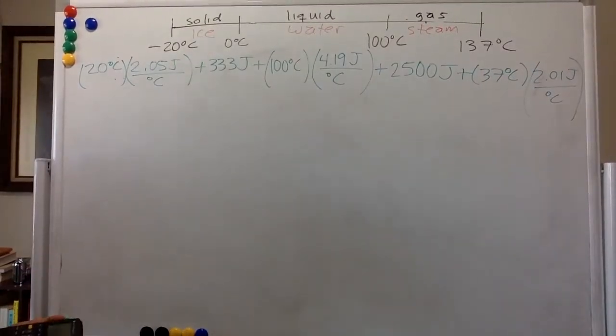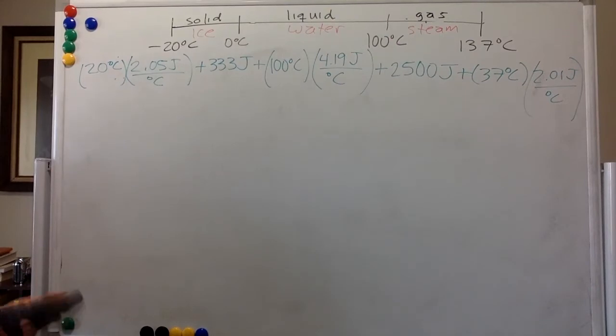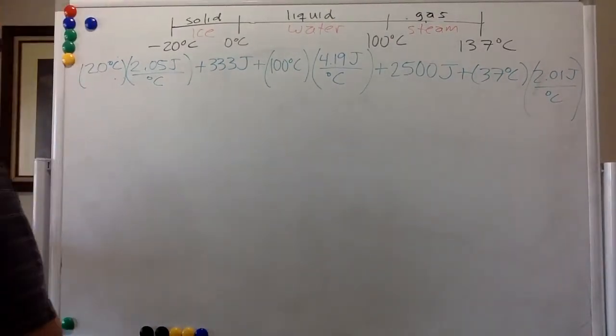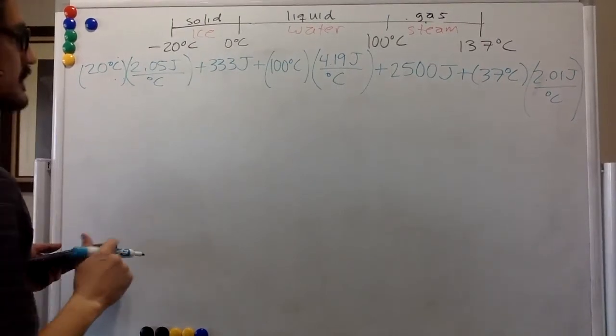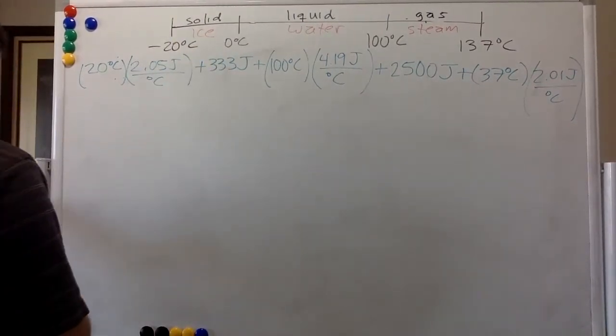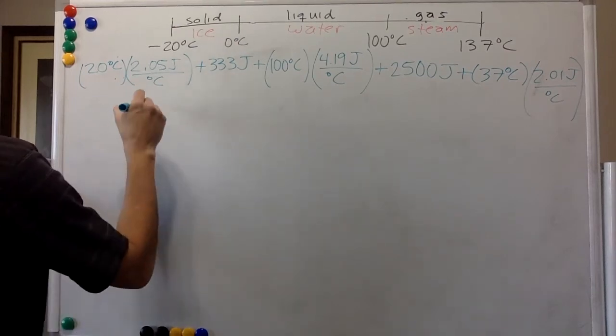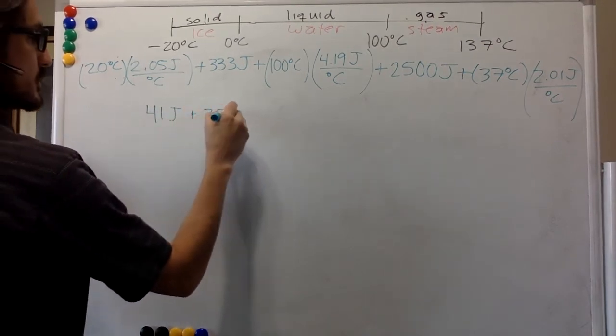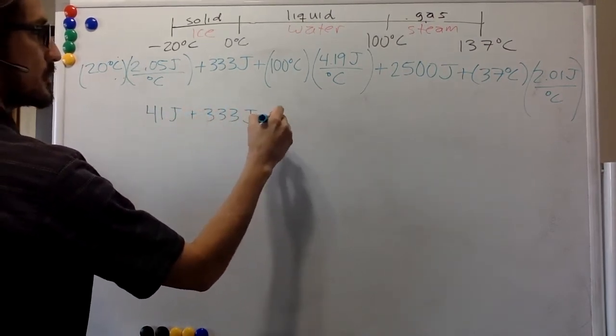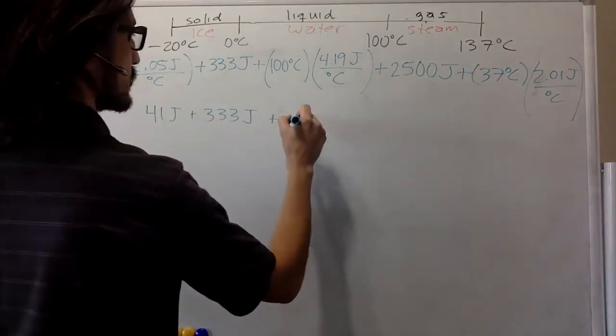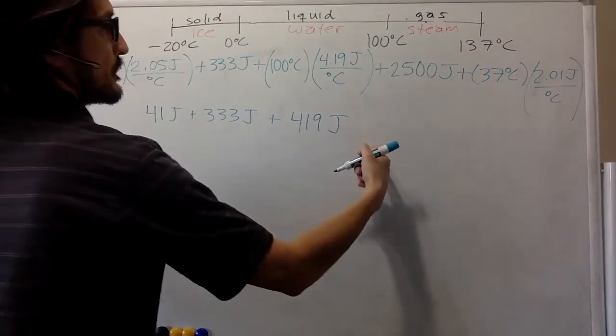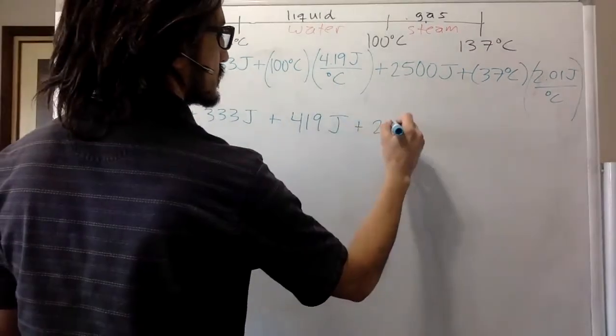So then the total amount of energy that we need to add to this poor gram of initially ice is 41 joules plus 333 joules plus 419 joules.